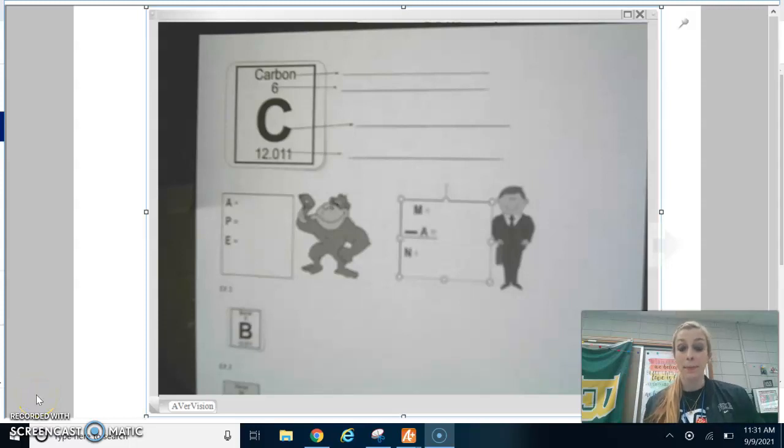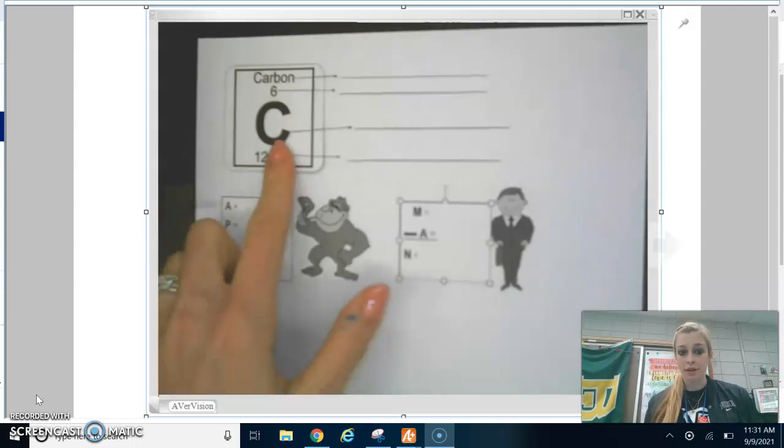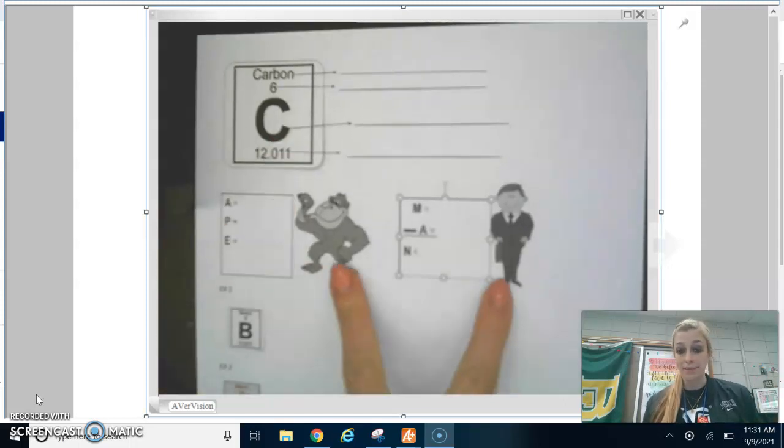Today we are talking about ApeMan. ApeMan is a tool that we use when a question asks you for the number of protons, neutrons, or electrons in an element. So if a question says, how many subatomic particles does carbon have, you use the tool ApeMan.